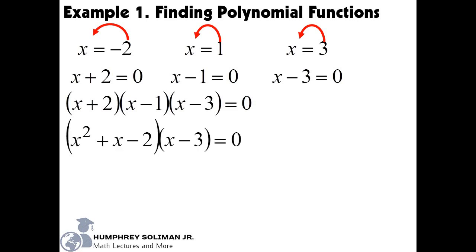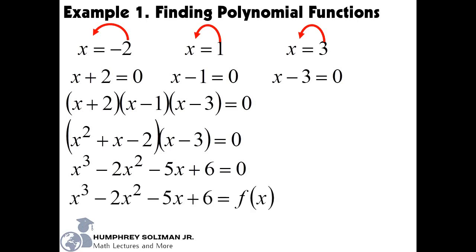Now, multiplying the first two quantities, x plus 2 and x minus 1, using the FOIL method, will give us x squared plus x minus 2. As we continue to multiply this quantity to x minus 3, we will get x cubed minus 2x squared minus 5x plus 6, equal to 0. We know that this is actually the function f of x, and if we want, we can write it on the left side of the equation.